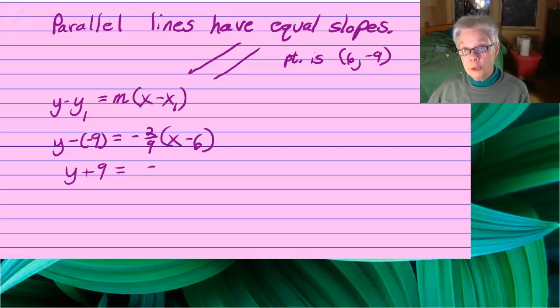And when you subtract, you add. When you subtract a negative number, you add, which is how I got y plus 9. It's going to be negative 2 over 9 times x minus 6. Just like before.